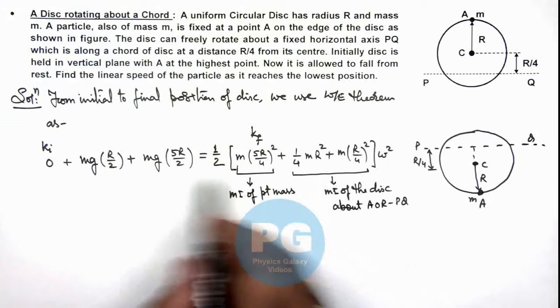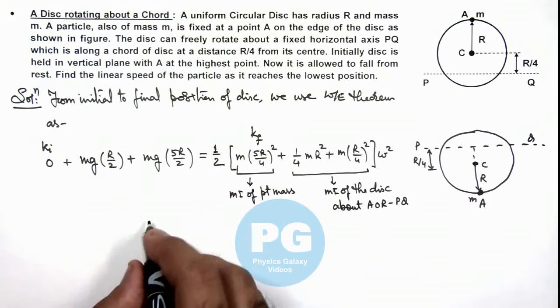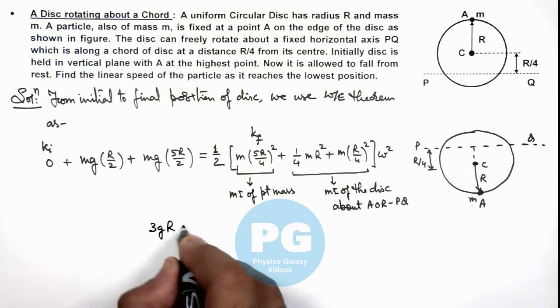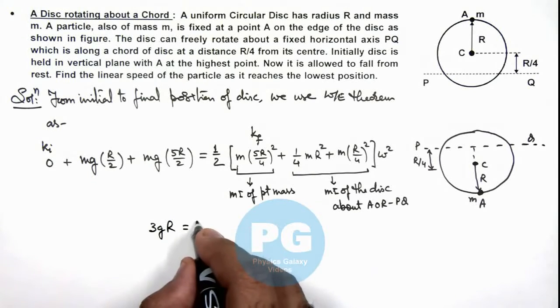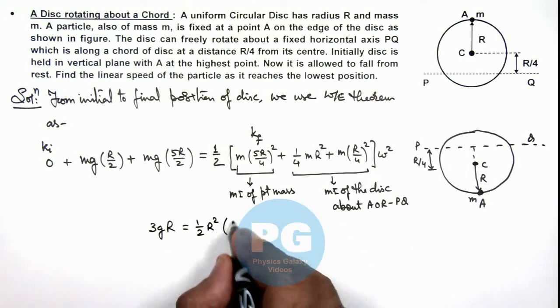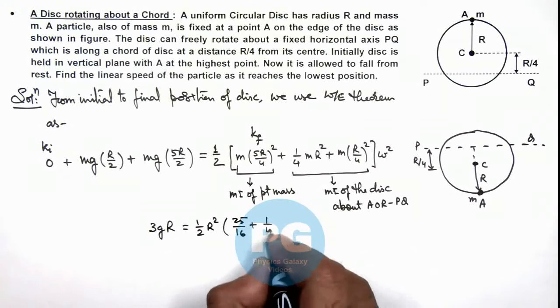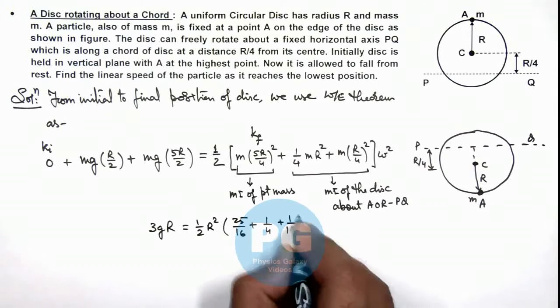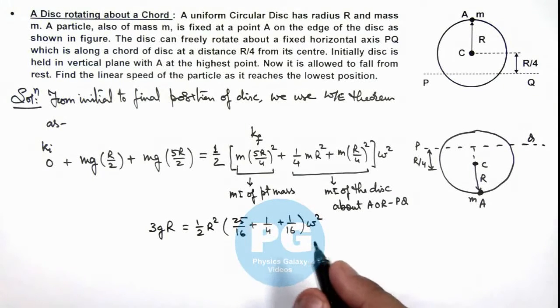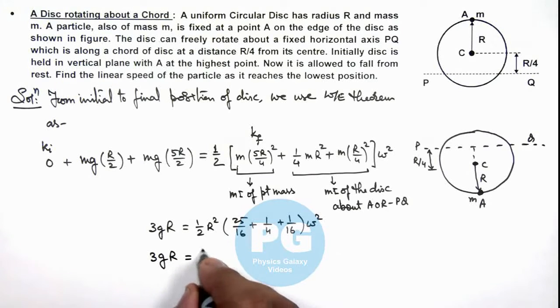Now simplifying this relation here, we can see m gets cancelled out and this gives us 3gR is equal to - R we can take common out - so this is half R square multiplied by 25 by 16 plus 1 by 4 plus 1 by 16, multiplied by omega square. So this numerical value gives us 3gR is equal to 30 by 32 R square omega square.